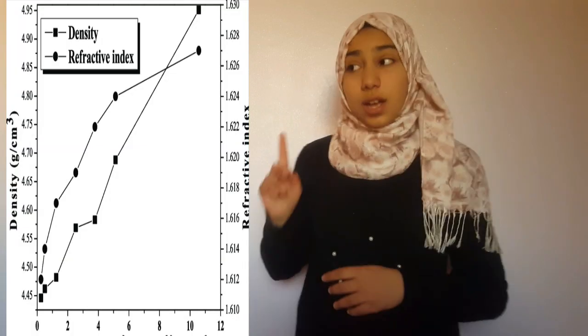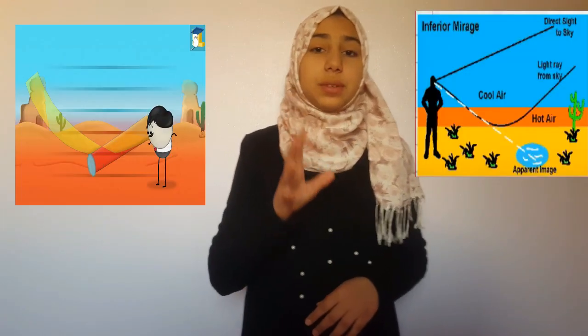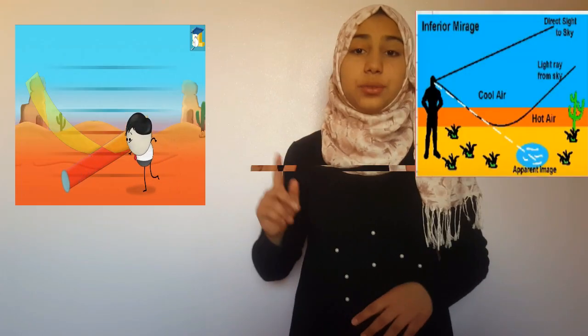And therefore, cold air has a greater refractive index. So when the density rises, the refractive index rises too. When light passes through these two layers, it will follow a curve.